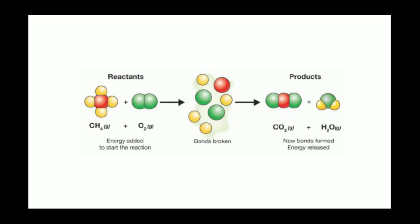Look at this example of the combustion or burning of methane. Notice that you have to break the bonds that hold the red carbon atom to the yellow hydrogen atoms. You also have to break the bonds that hold the green oxygen atoms together. Then new bonds form between the red and green atoms and the green and yellow atoms.